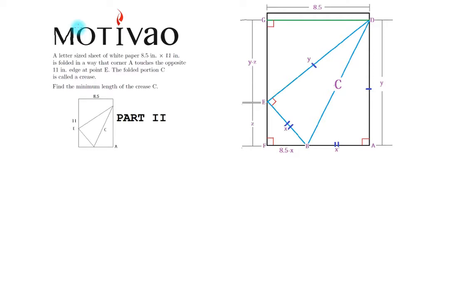In part 1, we found C, and C of X was 2X cubed divided by 2X minus 8.5 to the power of 1 half.